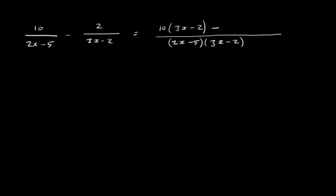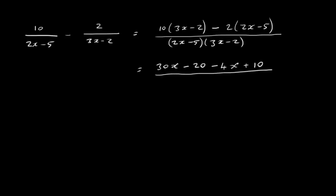We have a minus here and we do the same to the second fraction. What did we do to this 3x minus 2 to turn it into our common denominator? We multiplied by 2x minus 5, so we must multiply the numerator by 2x minus 5 as well, giving 2 times 2x minus 5. Multiplying out the numerator: 10 times 3x is 30x, 10 times minus 2 is minus 20, minus 2 times 2x is minus 4x, and minus times minus gives plus 2 times 5, which is plus 10. The denominator is 2x minus 5 times 3x minus 2.